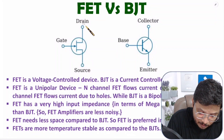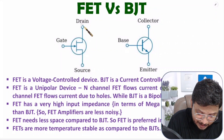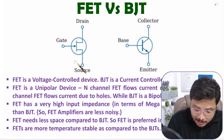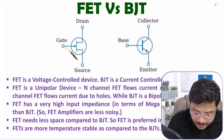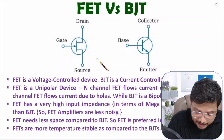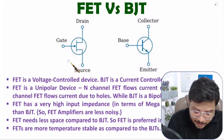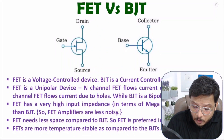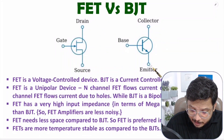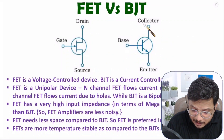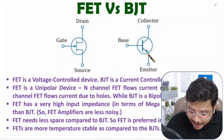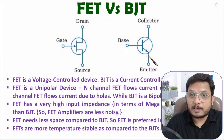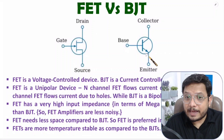With JFET, we have three terminals: drain, gate, and source. With the gate, you can observe the arrow is pointing inward, which means this is an N-channel JFET. On the other side, with BJT, we also have three terminals: collector, base, and emitter. With the emitter, if you observe the arrow, it is in the outward direction, which means this is an NPN transistor.